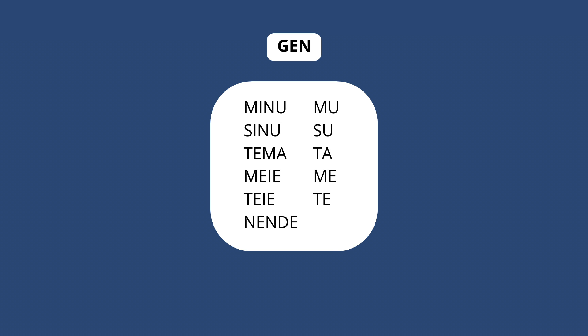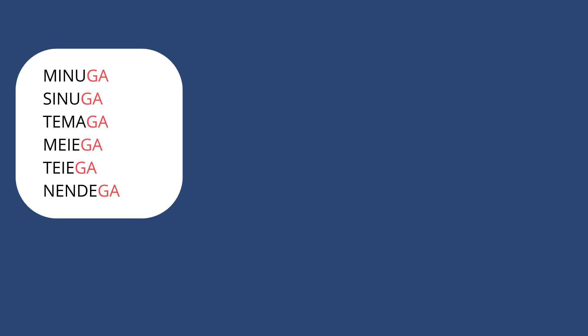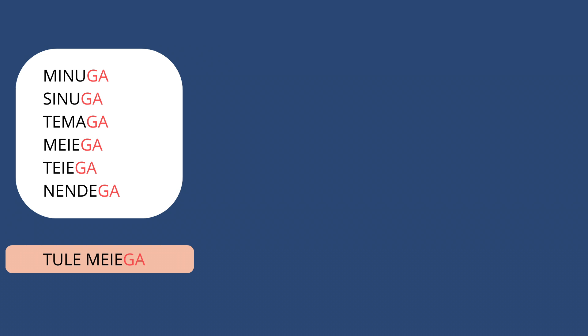Let's start adding. To say 'with', we add the suffix 'ga'. I'm going to delete the short forms since they are not really used here and put the suffix 'ga' at the end of these pronouns. For example: 'Tule meiega' — come with us. Or 'Ma räägin sinuga' — I am speaking with you.